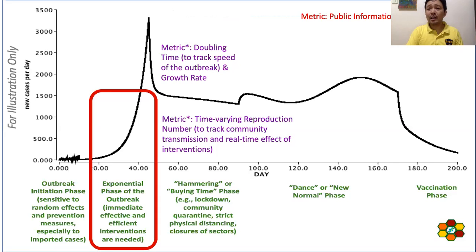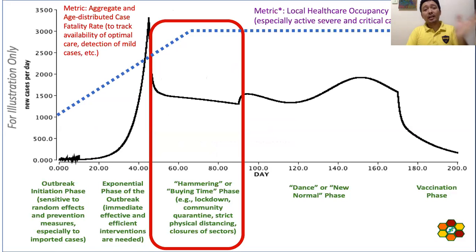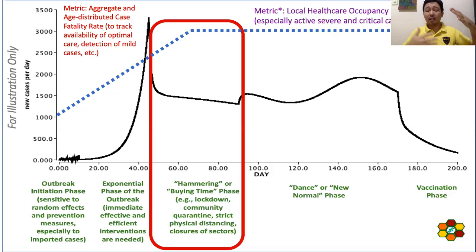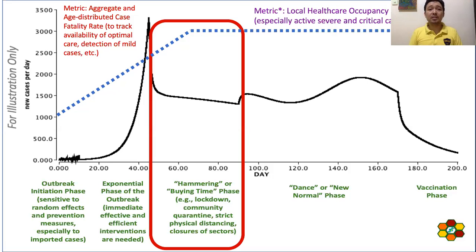We can also have a metric on public information awareness. Based on the paper of Thomas Cuello — I can share the link after this lecture — this is also called the buying time phase, where we suppress the very fast increase of cases so our healthcare capacity can give optimal care to the cases and the number of cases will not go above healthcare capacity. We have metrics there: the case fatality rate, and the occupancy rate or utilization rate of our local healthcare.